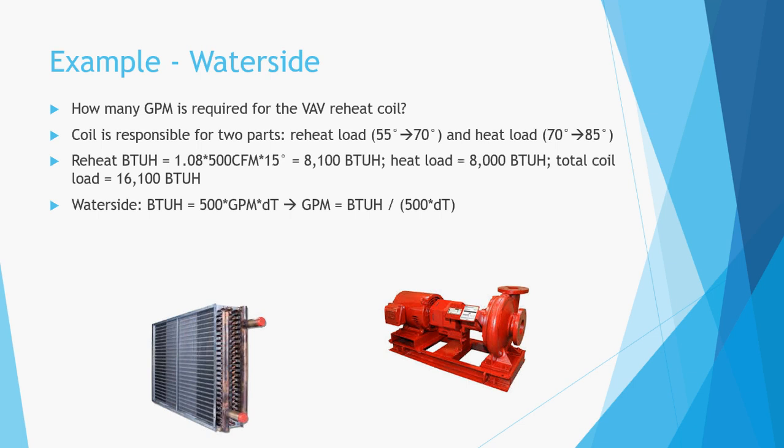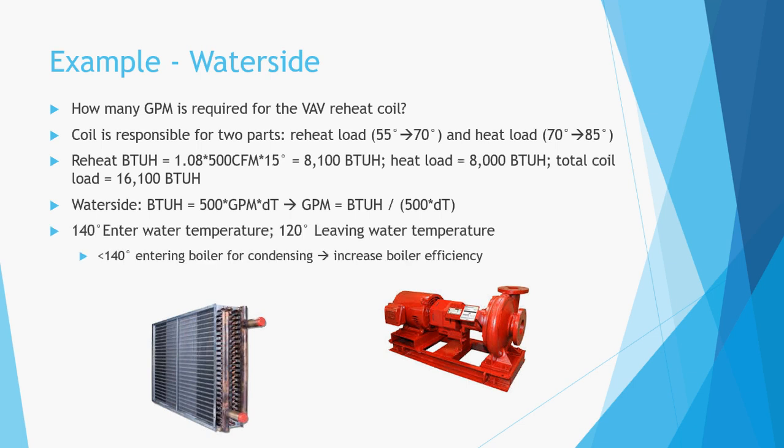Using the water side equation solved for GPM, we assume water entering the coil at 140 degrees and leaving at 120 degrees — a 20-degree delta T. This is lower than conventional hot water temperatures of 170 or 180 degrees, but when using a condensing boiler, the flue condenses at return water temperatures below 140 degrees, and the lower the temperature, the greater the efficiency. Using 140-degree supply water ensures the boiler always condenses, maximizing energy savings. With a 20-degree delta T and 16,100 BTUs per hour, the required water flow is 1.6 GPM.